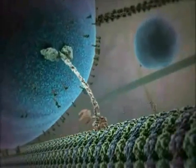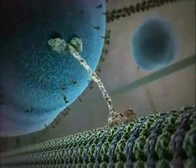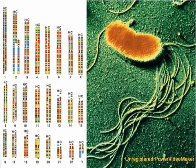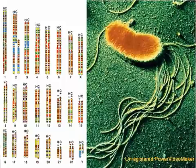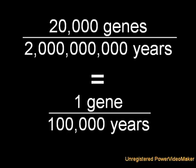But where did this diverse array of proteins, and in turn genes, come from? The human genome contains some 25,000 genes, but bacteria only contain between 1,000 and 6,000 genes. If the theory of evolution is correct and humans share a common ancestor with bacteria, then over the past 2 billion years we must have gained at least some 20,000 genes. If you do the math, that's only one new gene every 100,000 years.